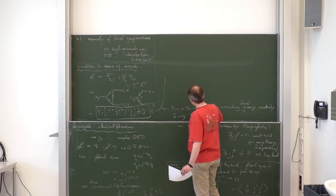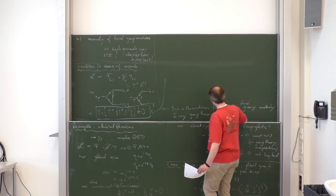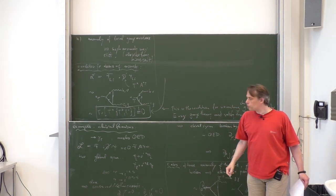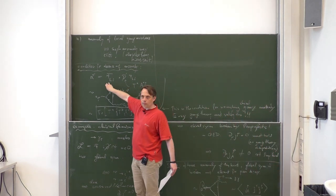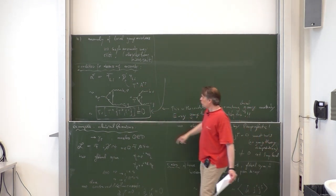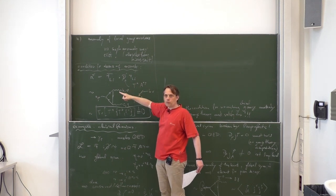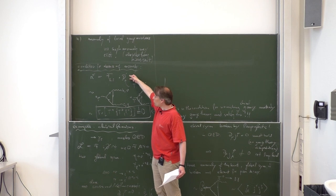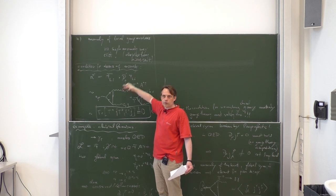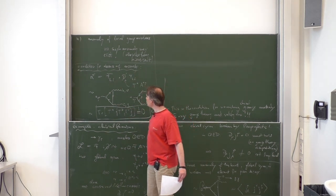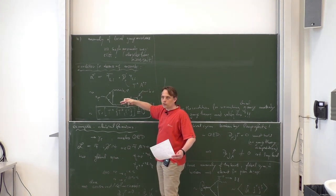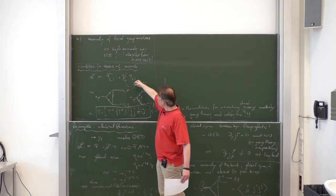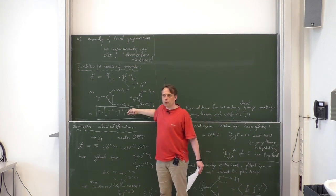Every gauge theory must satisfy this — there is no exception. Every gauge theory with fermions can be brought into that form, because if you have a gauge theory which contains right-handed fermions, you can write the right-handed fermions as charge conjugation of left-handed fermions. Therefore every fermion — right-handed, left-handed, whatever — can be brought into the form of only left-handed fermions. Even for QED or QCD or whatever you want, you can bring the Lagrangian into this form, though when converting a right-handed fermion into a left-handed anti-fermion the generators may have to be adapted.